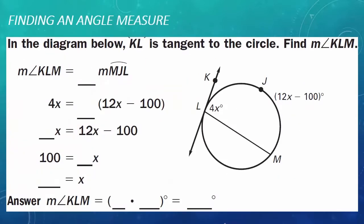Example 1: finding an angle measure. In the diagram below, line KL is tangent to the circle. Find the measure of angle KLM. We need to know the measure of this angle. Going from Theorem 10.12, when we have a chord inside a circle and a tangent intersect, this angle measure is one-half the measure of its intercepted arc. So the measure of angle KLM is equal to one-half the measure of arc MJL.